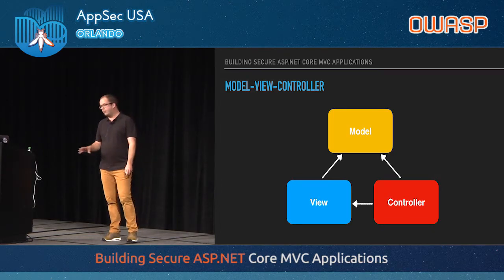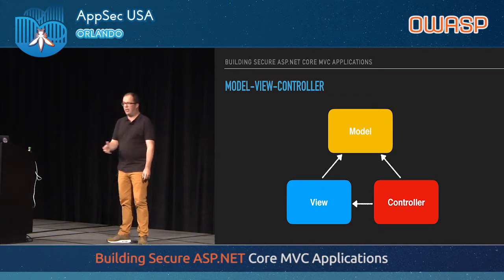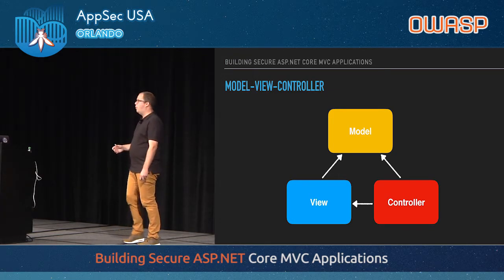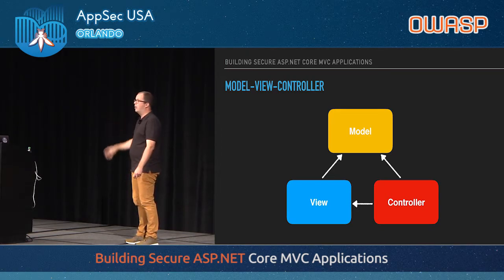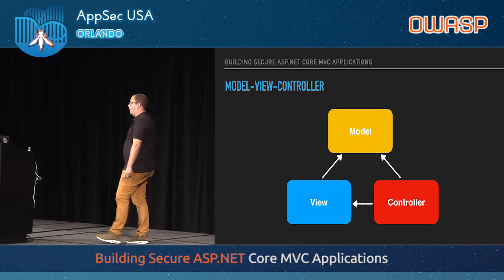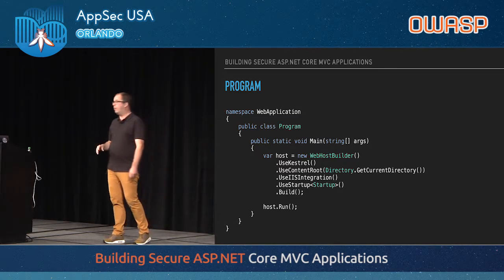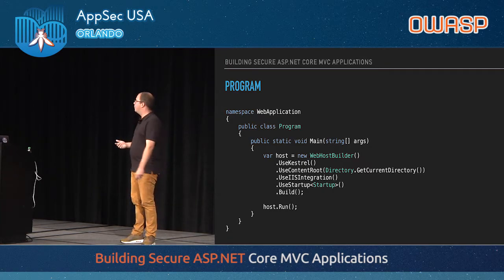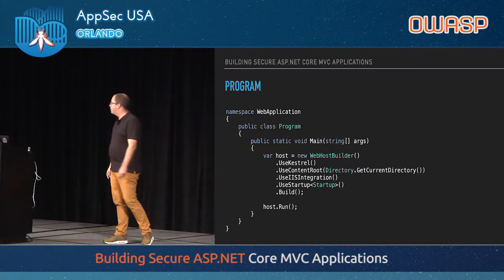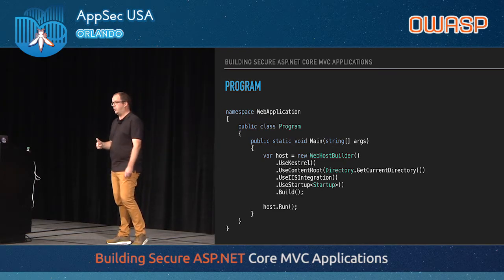In the Model-View-Controller pattern, the controller has the biggest responsibility. It's the entry point for every request fired against the application — it will parse or present model data with the help of a view. When you start a new project with MVC Core, it's based on a web host builder that ties up the whole pipeline. The startup class defines two configure methods — Configure and ConfigureServices — whose internals we'll cover later.